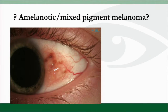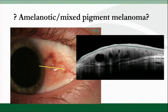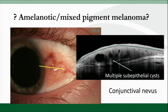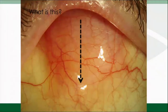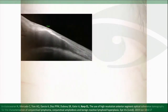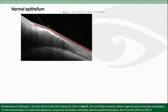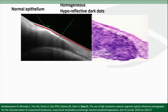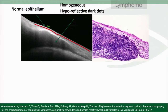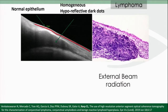Another referral for a pigmented lesion. The OCT shows thin epithelium with cysts, consistent with a conjunctival nevus. Then there's something we recognize as a pink salmon lesion, and what you see here are homogeneous hyporeflective dark dots below the epithelium. This was biopsied and sent for flow cytometry and gene rearrangement, which confirmed lymphoma.